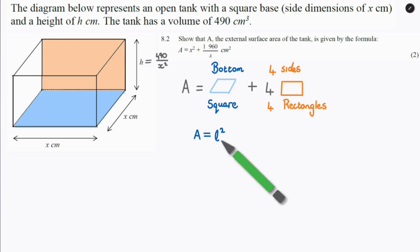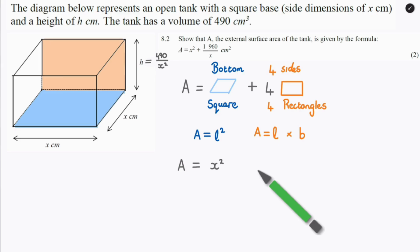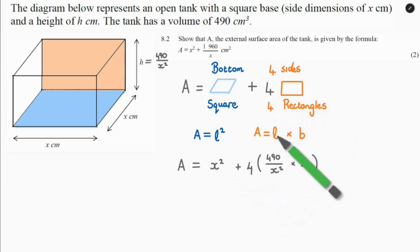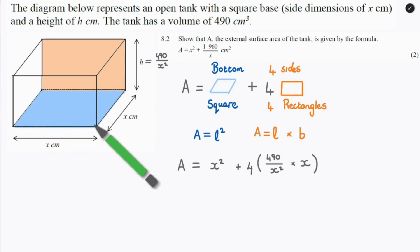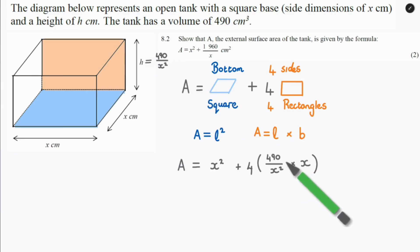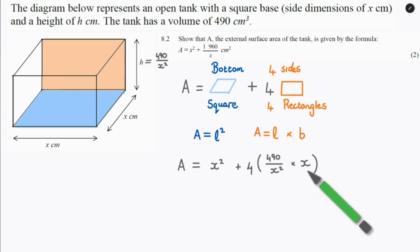The area of the square is length times length, and the area of a rectangle is length times breadth. So, formulating our area equation: the area of the blue square is x times x, which is x squared. Then we add four rectangles — four times length times breadth. The length of the orange rectangle is x, and the breadth is the height, which from the previous question equals 490 over x squared.